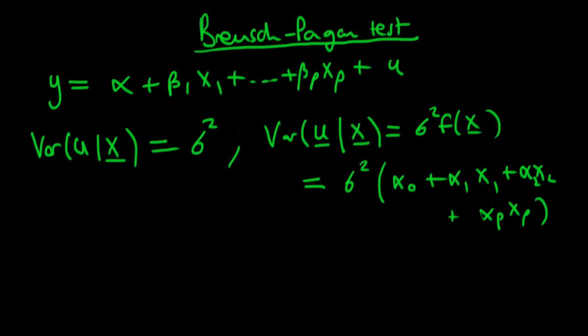All the way through to alpha_p times x_p. And this is very general — any of these particular alphas might be equal to zero. It might just be that there's heteroskedasticity along a few of these variables or perhaps one. But if any of these alphas are different from zero, other than alpha_0, then that is a sign that we've got heteroskedasticity and our OLS estimators are no longer BLUE — in particular, they're no longer best.